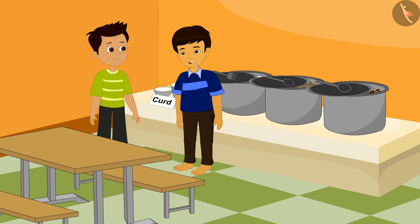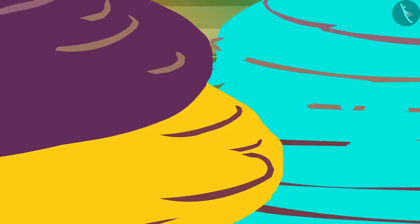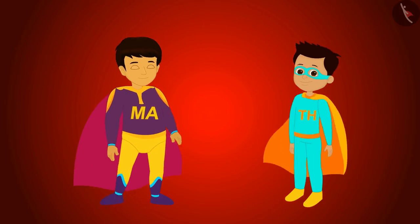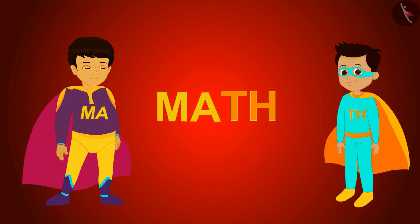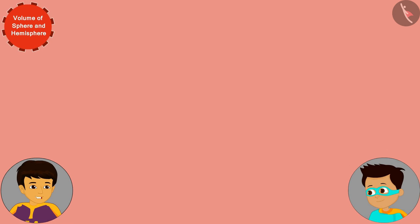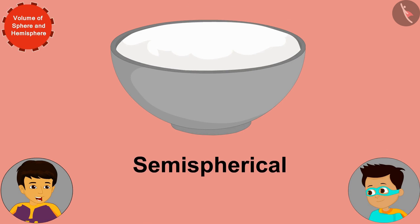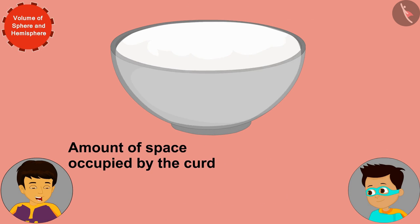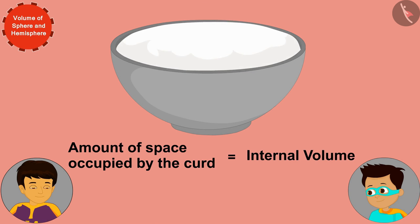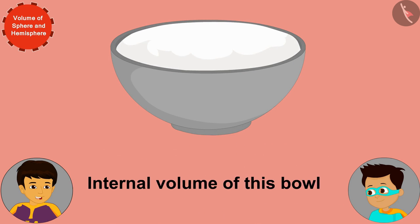That means it's math time! The bowl is semi-spherical, and the amount of space occupied by the curd in it will be equal to its internal volume. So, first we have to find the internal volume of this bowl.